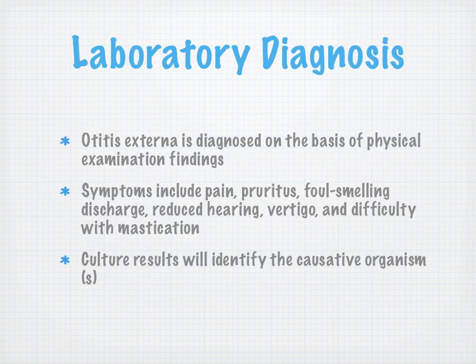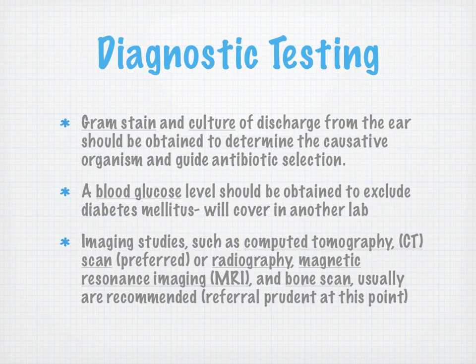Laboratory diagnosis: otitis externa is diagnosed on the basis of physical examination. Symptoms include pain, pruritus, foul-smelling discharge, reduced hearing, vertigo, and difficulty with mastication. Culture results will identify the causative organism. Gram staining and culture of the discharge from the ear should be obtained to determine the causative organism and to guide antibiotic selection. If you have a patient with otitis externa, it's also good practice to do a blood glucose level to exclude diabetes mellitus — we'll cover that test in another lab.